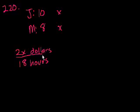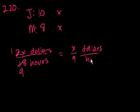So they were paid 2x dollars for 18 hours of labor. So the average wage should be the fair per hourly wage should be, we can divide by 9. You get x over 9 dollars per hour. That's the fair wage.